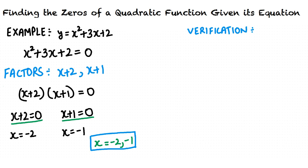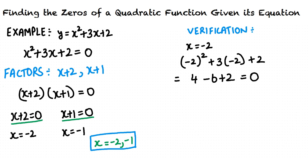A great advantage with these problems is that we can verify whether our solutions are correct. According to our solution, if we plug in negative 2 and negative 1 for x in the quadratic expression, we must get zero, because at those points the function intersects the x-axis, implying y equals zero. Let us plug in x equals negative 2: we get negative 2 squared plus 3 times negative 2 plus 2, which equals 4 minus 6 plus 2.